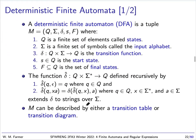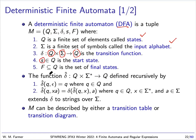There are different kinds of finite automata. The two kinds we're going to look at mostly are deterministic finite automata and non-deterministic finite automata. Deterministic finite automata are abbreviated DFA, and they're defined as a tuple with five components: a finite set of states, a finite input alphabet, a transition function that takes a state and a symbol to a new state, a start state, and a set of final states.